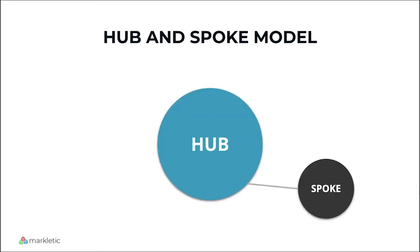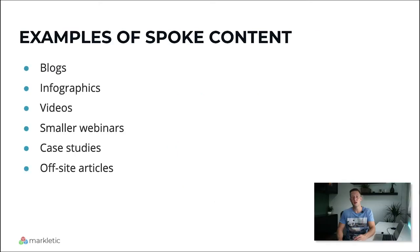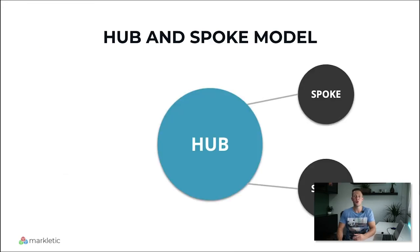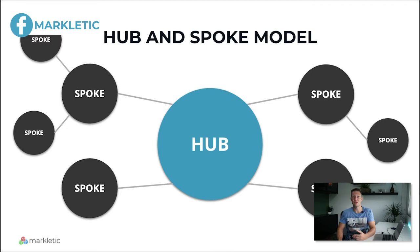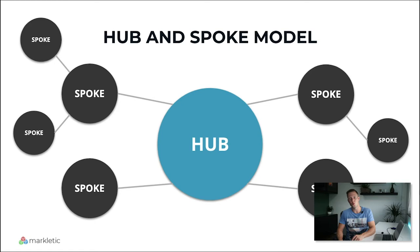Then you have the spoke content. The goal of spoke content is to drive qualified traffic to your hub content, so in your spoke content you will link to your hub content. Typical examples of spoke content are blogs, infographics, videos, smaller webinars, case studies, and off-site articles that link back to your website. For every piece of hub content, you want to create multiple pieces of spoke content. Of course, the spoke content must be relevant to the hub content, otherwise this content marketing strategy is not going to work.